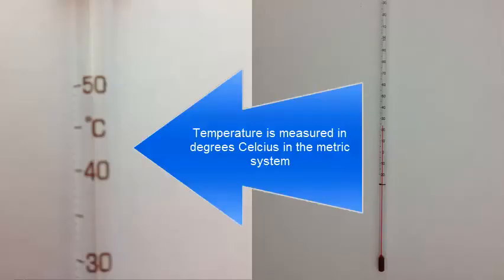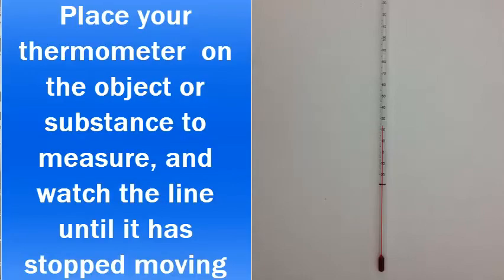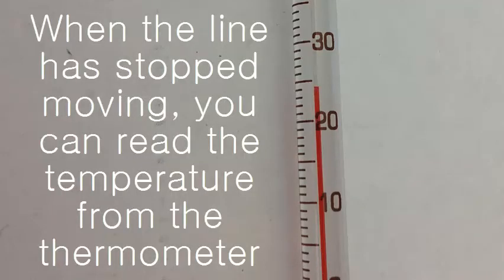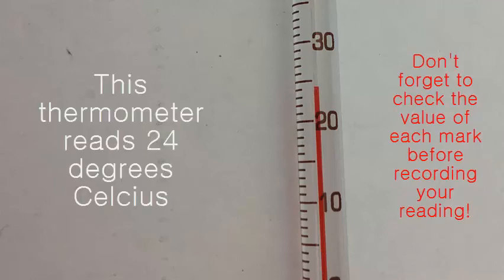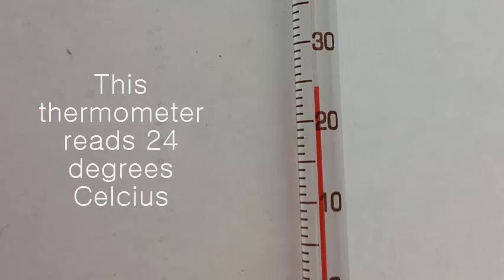Temperature is measured in degrees Celsius in the metric system. To measure temperature, simply place your thermometer on the object or substance you wish to measure, and watch until the line has stopped moving. When the line has stopped moving, you can read the temperature from the thermometer. Don't forget to check the value of each mark on the thermometer before recording your reading. This thermometer reads 24 degrees Celsius.